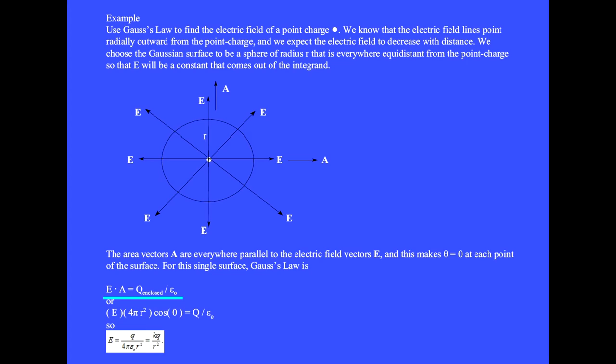For this single surface, Gauss's law gives E dot A equals Q over epsilon zero. The area of a sphere is 4 pi r squared. The dot product gives E times A times cosine theta equals zero equals Q over epsilon zero. Solving for E gives Q over 4 pi epsilon zero r squared, which combining constants we often write as kQ over r squared.